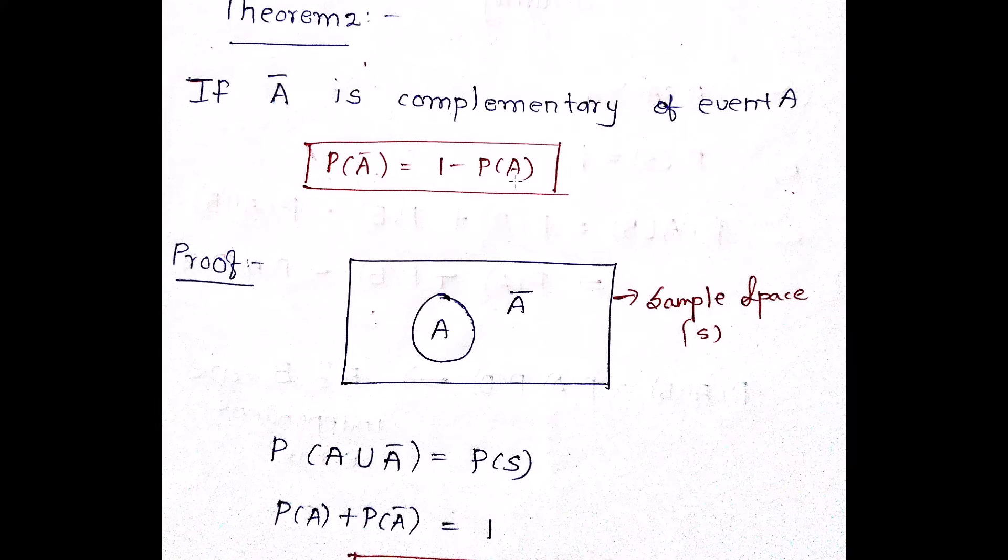Because probability of A plus probability of A bar both gives you equal to 1. So I can say the probability of A bar is given as 1 minus probability of A. Please make a note of this concept. It will be helpful for you.